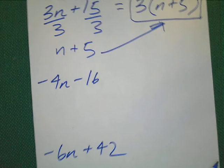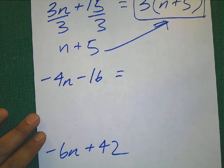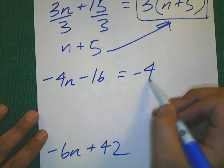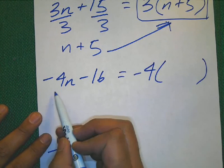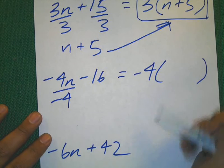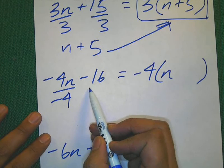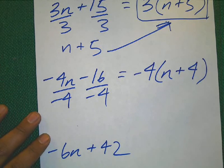Let's try the second one. Negative 4n minus 16. The greatest common factor between negative 4n and negative 16 is negative 4. We know there's going to be parentheses. So now let's divide negative 4n by negative 4 to get a positive n. Let's now divide negative 16 by negative 4 to get a positive 4.